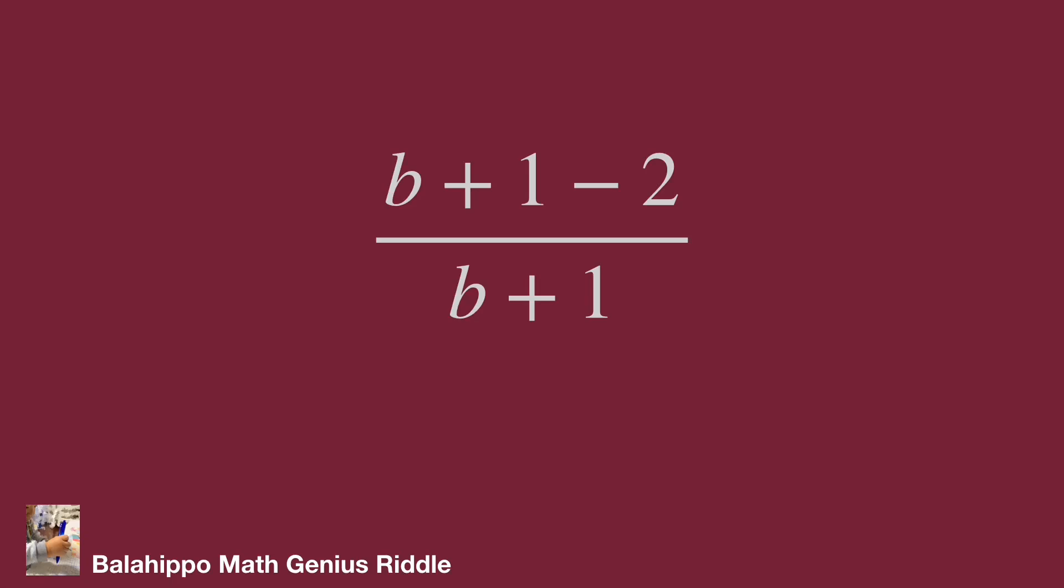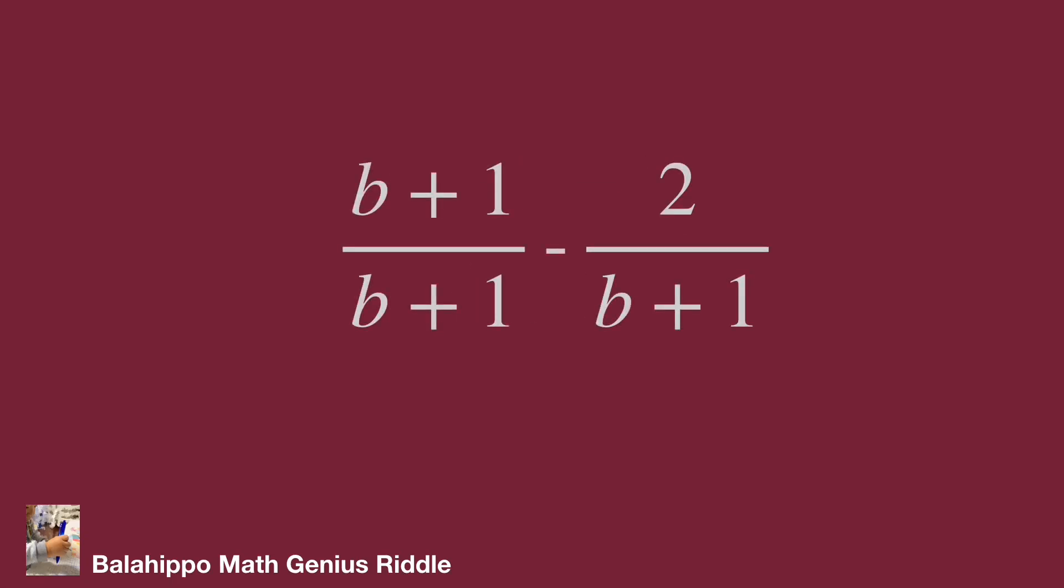Then divide the fraction as (b plus 1) over (b plus 1) plus 2 over (b plus 1). The first term (b plus 1) over (b plus 1) is an integer too.